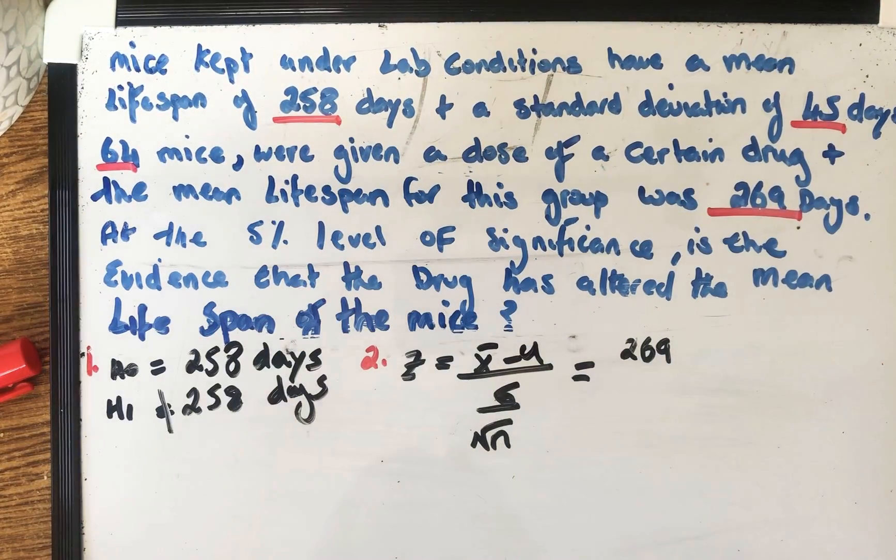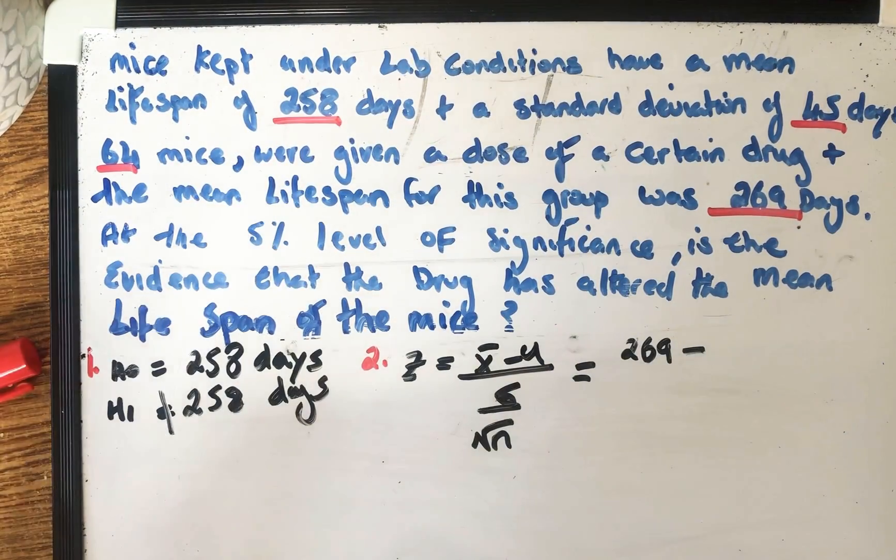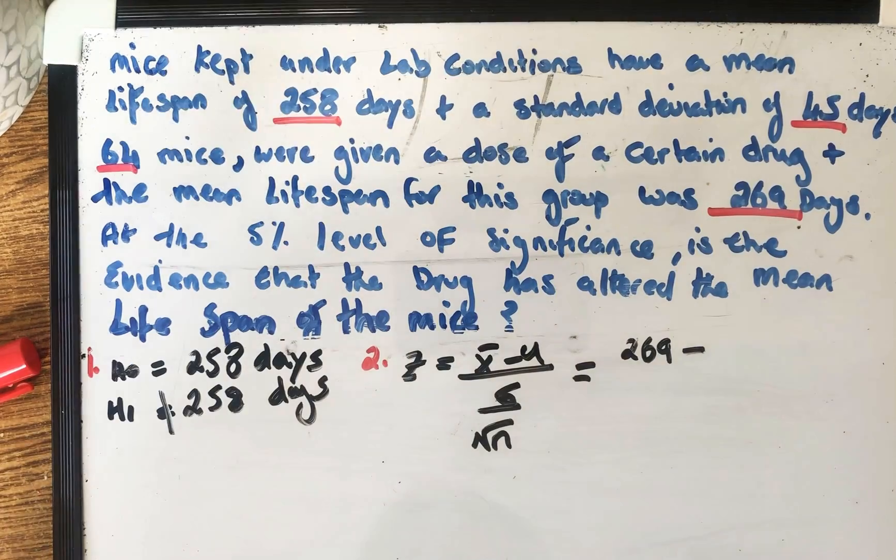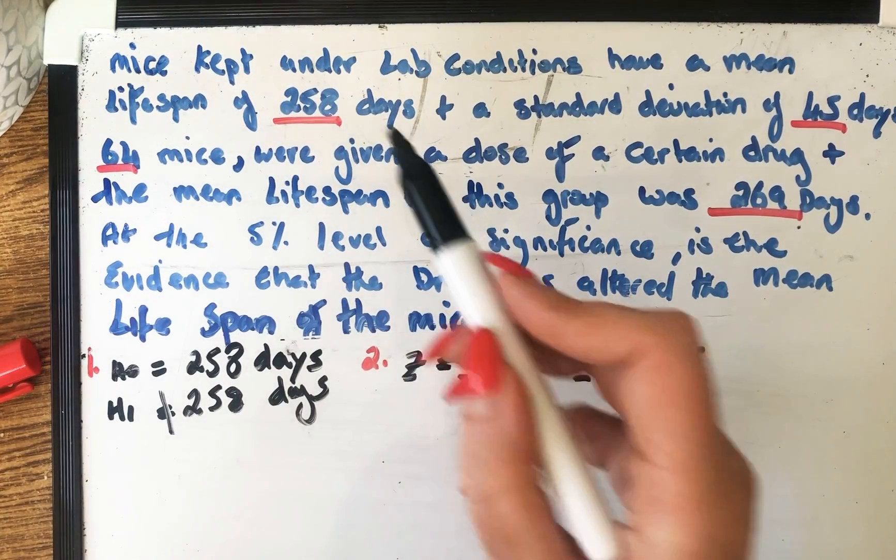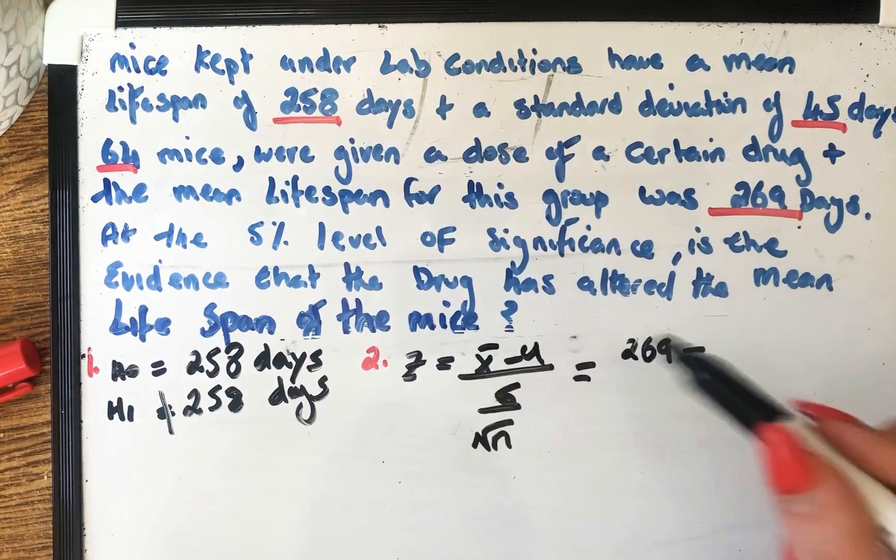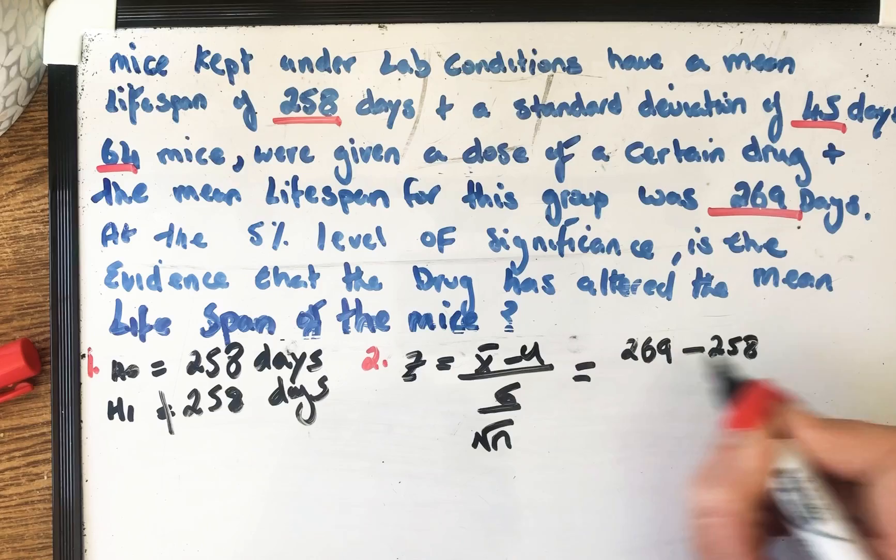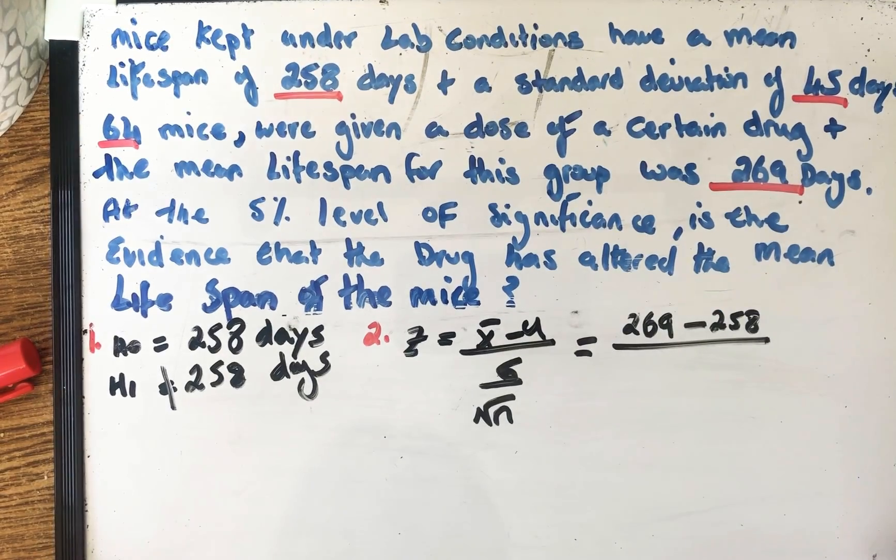So that's 269 minus our mu. This is the mean of the population, the original mean of all of them together, all of the mice. And it says here that the mice are kept under lab conditions have a mean lifespan of 258. That's 258.